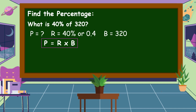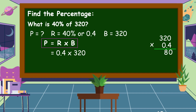So, we're going to substitute the value of R and B into our formula: 4 tenths times 320. Let's multiply 320 times 4 tenths. 4 times 0 is equal to 0. 4 times 2 is equal to 8. 4 times 3 is equal to 12. Then we're going to count the decimal places in our factors — we have only one decimal place — then we can omit zero in our product. Therefore, the percentage is equal to 128.